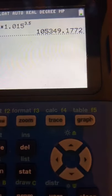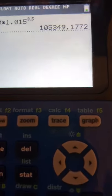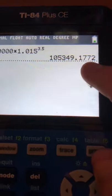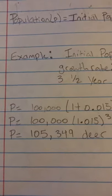You get 105,349.1772 deer. You'd have to round down to 105,349 because you cannot have a fraction of a deer. So your answer would be population equals 105,349 deer.